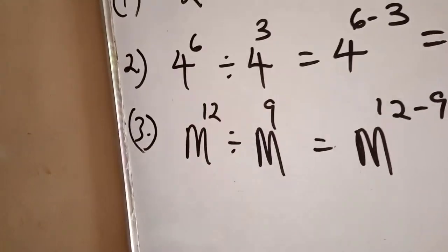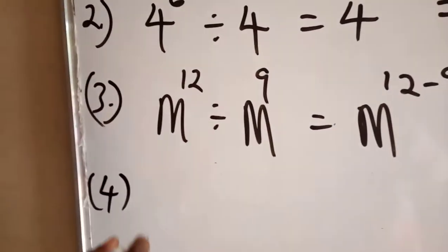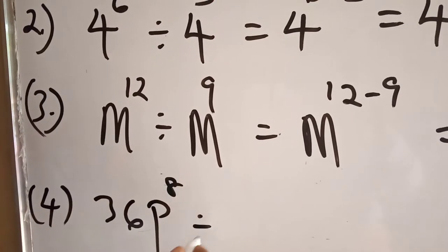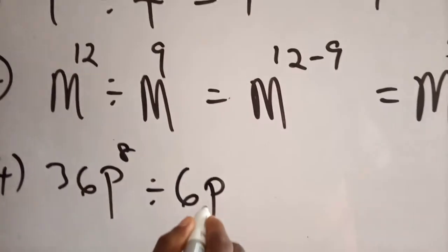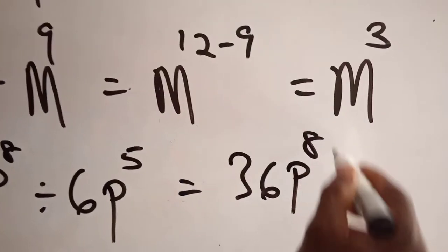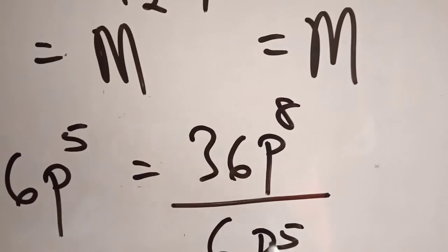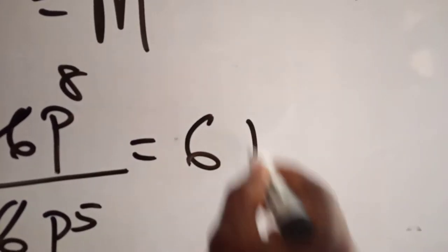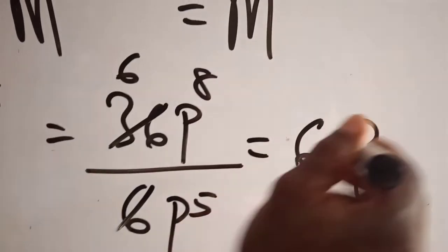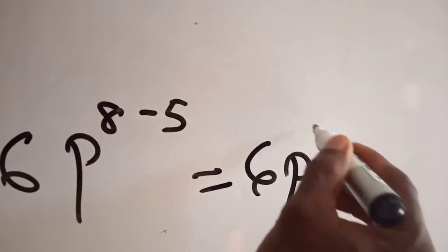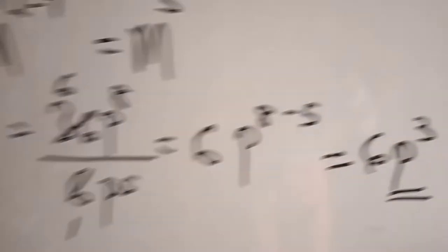Example number 4: 36p raised to the power of 8 divided by 6p raised to the power of 5. Write it as 36p⁸ over 6p⁵. The 36 divided by 6 gives 6, and then p raised to the power of 8 divided by p raised to the power of 5 becomes p raised to the power of 8 minus 5. That gives you 6p raised to the power of 3.